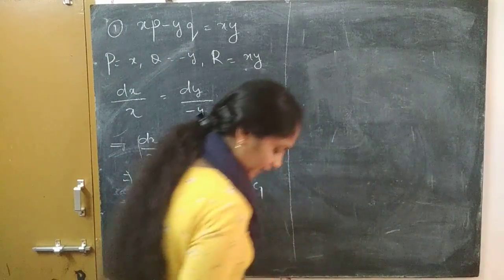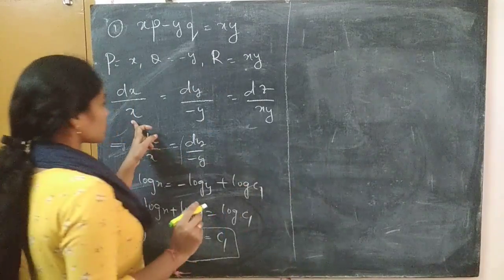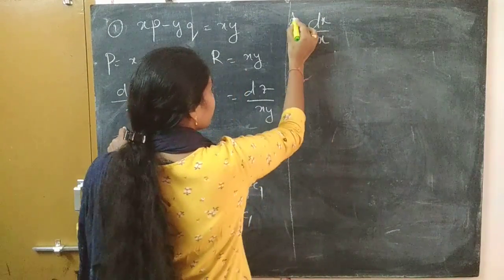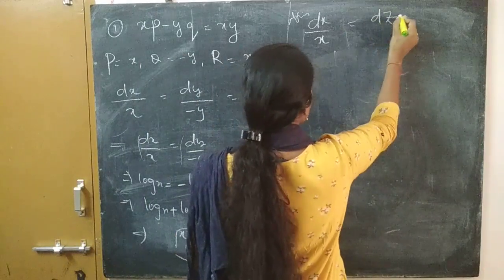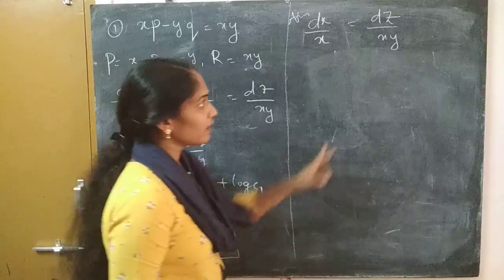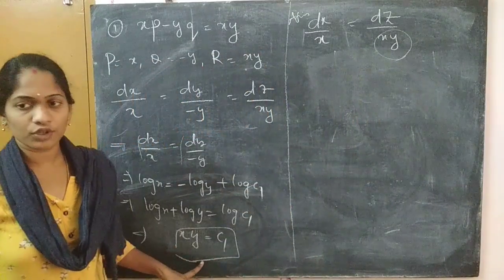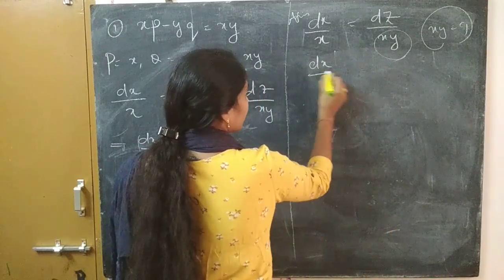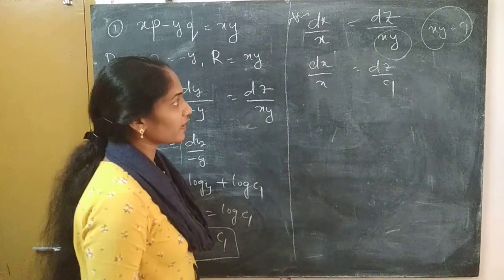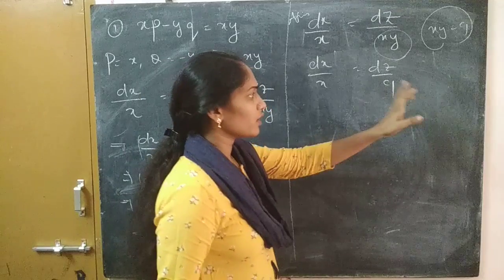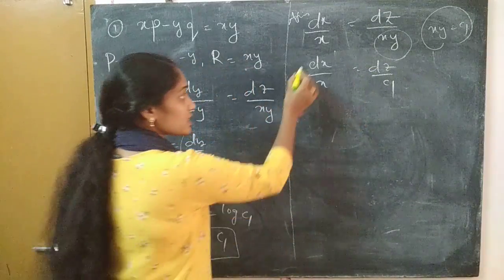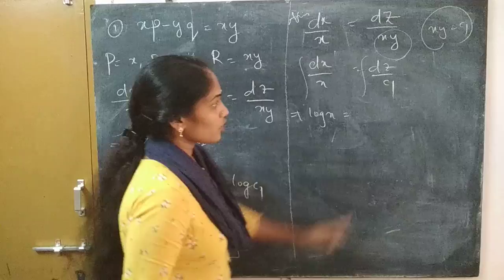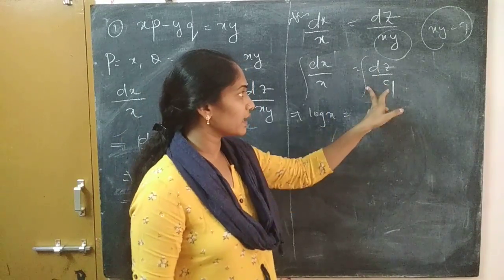So let's do the second one by taking the other fractions — first and third. Instead of taking the minus term, it is simpler to take the positive term. So we take: dx by x equals dz by xy. Please don't cancel the term xy. Just keep in mind that xy is one of our solutions. So substitute xy equal to c1. Now dx by x equals dz by c1. This is the derivative we were expecting — c1 is a constant, so we can take it outside and integrate dz.